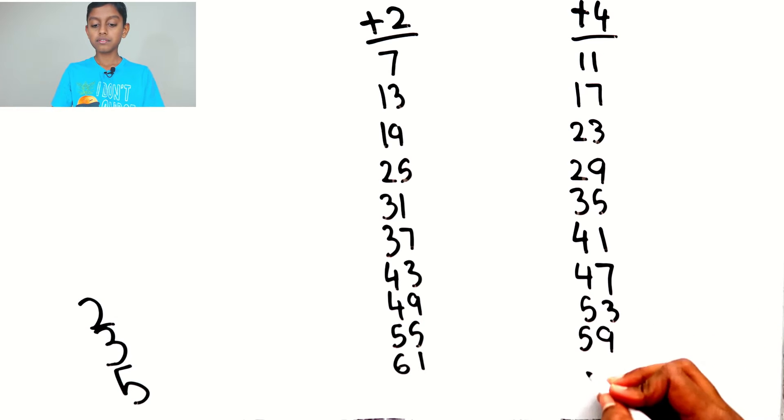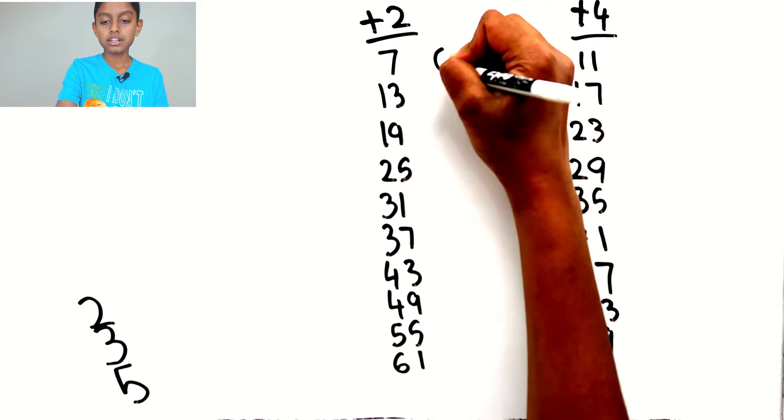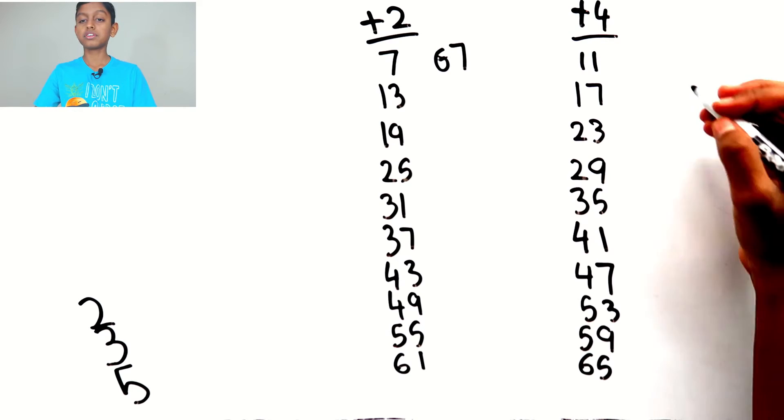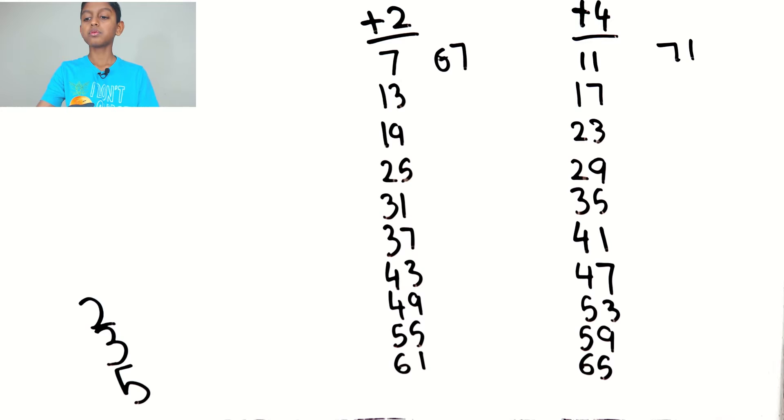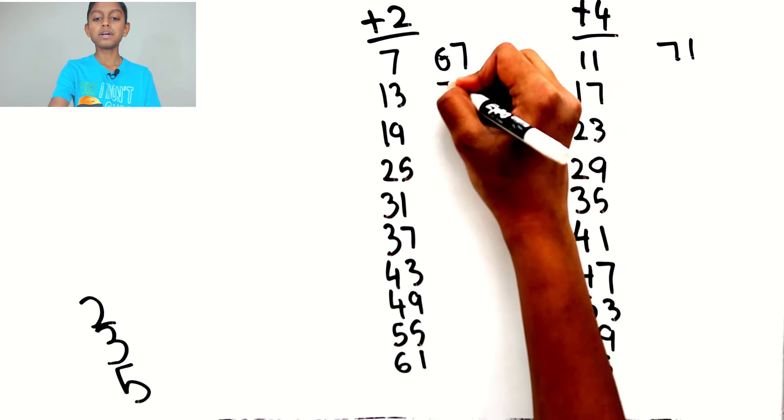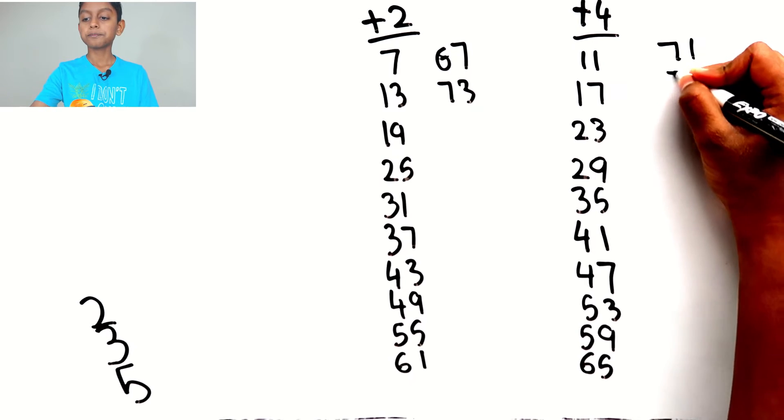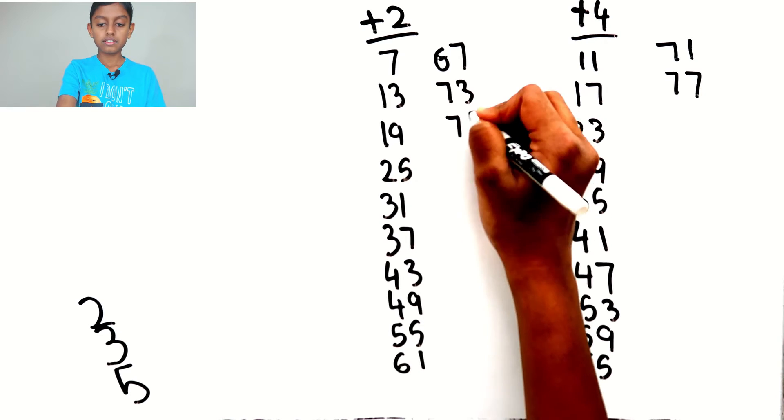Add 4 to 61 to get 65, add 2 to 65 to get 67, add 4 to 67 to get 71, add 2 to 71 to get 73, add 4 to 73 to get 77, add 2 to 77 to get 79.